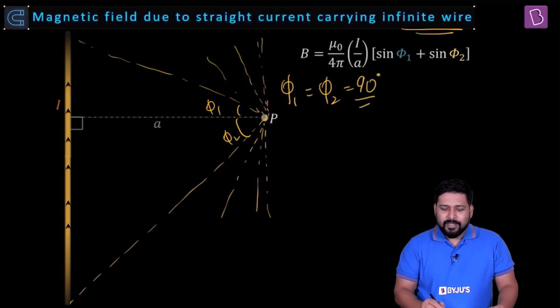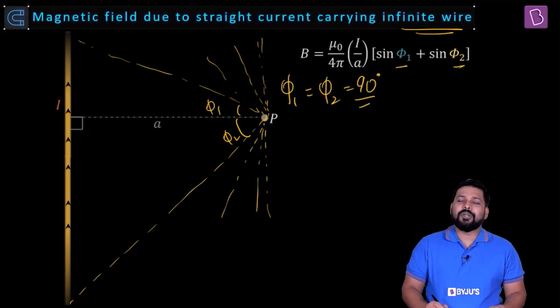So if it is an infinite wire, the value of phi 1 and phi 2 becomes equal to 90. So we know sin 90 is 1 and sin 90 is 1. So 1 plus 1, that will be 2.